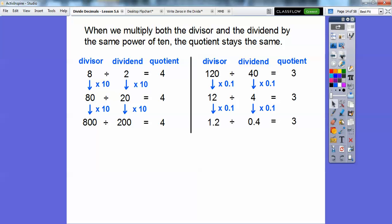So it moves it one place to the left. So 1.2 divided by 0.4 is also going to be that 3 right there. So we multiply both these numbers by the same power of 10. The quotient's going to be the same, no matter what right there.